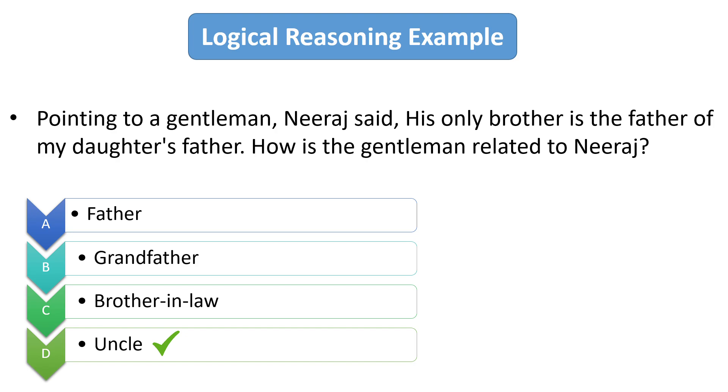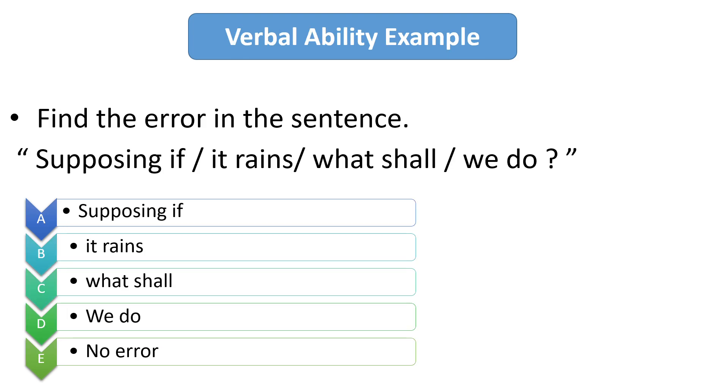So now our first question from the verbal ability is to find the error in the sentence. And the sentence is supposing if it rains what shall we do. So its right answer is A. Because there is no sense of using supposing and if together, as both are used for assuming something. So the correct answer is A which is supposing if.